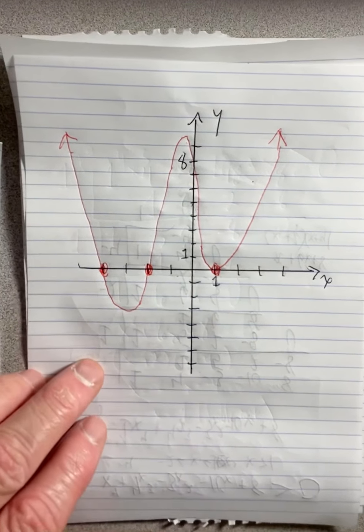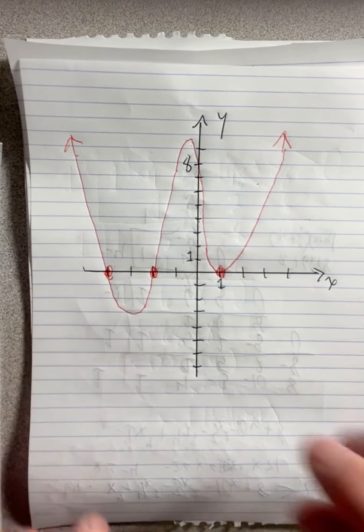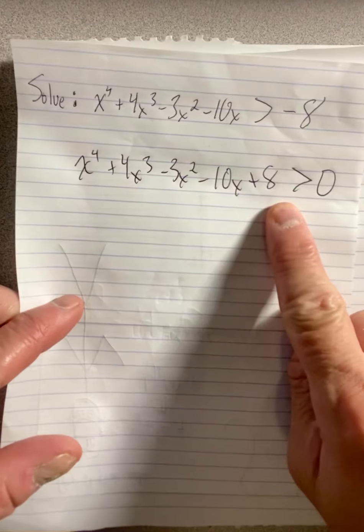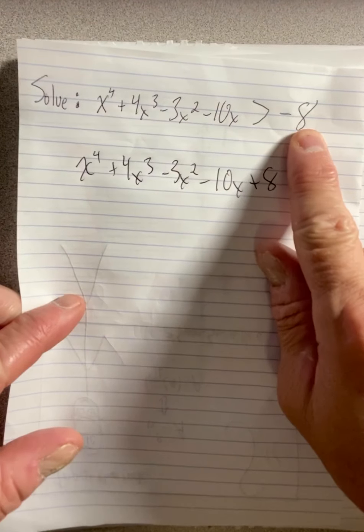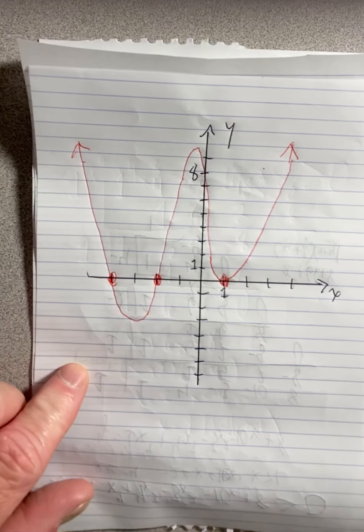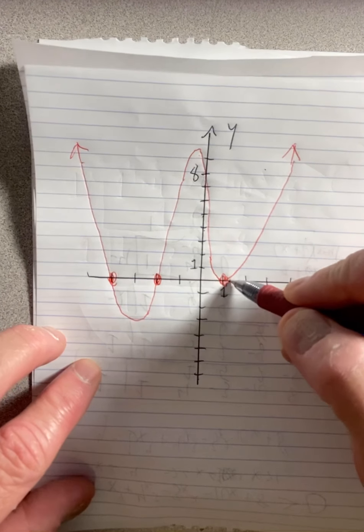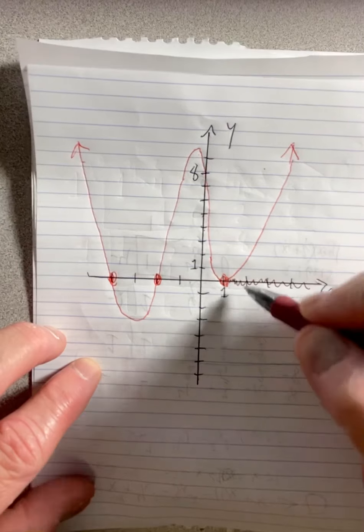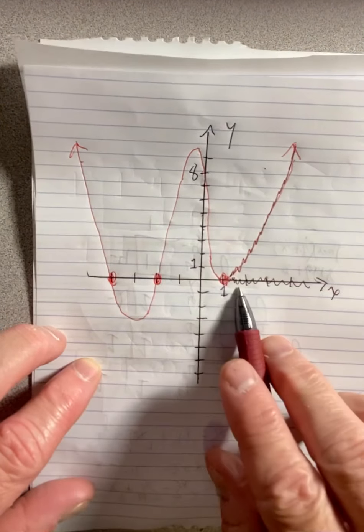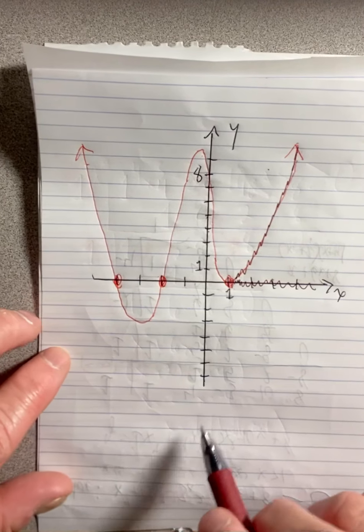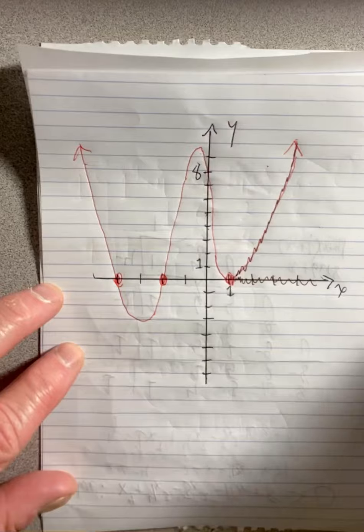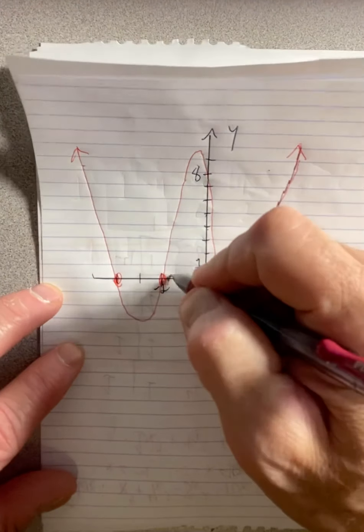But remember, we wanted to use this to find the solution to this inequality here, which is the same as the solution set to that inequality. So we want to find where the polynomial is greater than zero. So we're going to look and see for what x values is the polynomial above the x-axis. Well, for x values greater than one. But wait a minute, also for x values between negative two and one. In here.